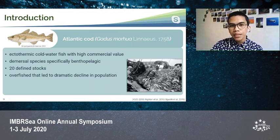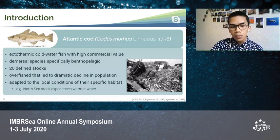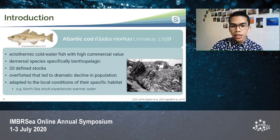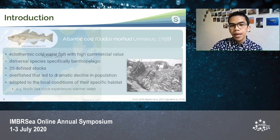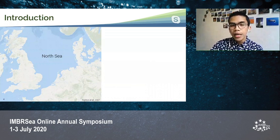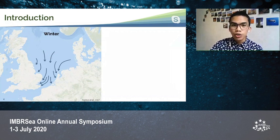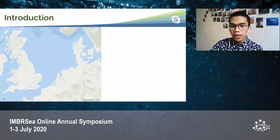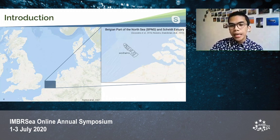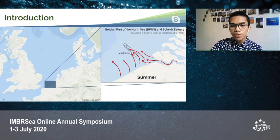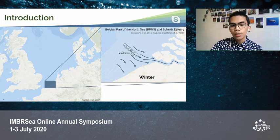However, this species has been overfished, which led to a dramatic decline in population. It is also adapted to the local conditions of its specific habitat. For example, the North Sea stock experiences warmer water. In the North Sea, especially in the southern bight, they migrate towards northern and deeper waters during the summer, and they migrate back to the coast and estuarine waters during winter. Specifically in the Belgian part and the Scheldt Estuary, they aggregate around wind farms and shipwrecks, and migrate towards the coast and the Scheldt Estuary during winter. This migration pattern was attributed to prey availability.